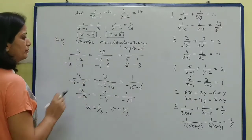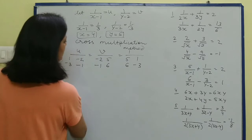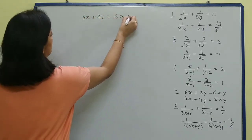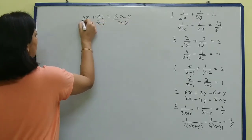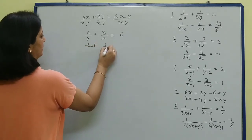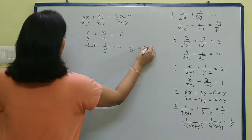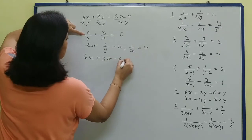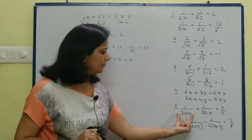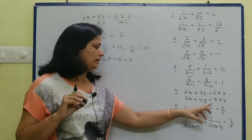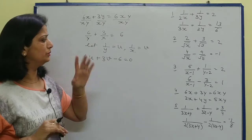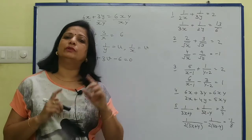For the next type, when you get an equation like 6x - 3y = 6xy, you need to convert it to standard form. To do this, divide the whole equation by xy: you get 6 upon y - 3 upon x = 6. Then assume u = 1 upon y and v = 1 upon x, so the equation becomes 6u - 3v - 6 = 0. Form the second equation similarly and solve by cross multiplication. For another type, assume u = 1 upon (3x + y) and v = 1 upon (3x - y), form two equations, find u and v, then find x and y.